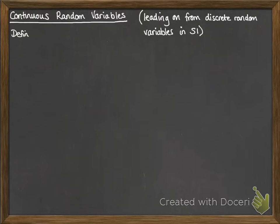So we have definitions here. A continuous random variable is defined by a probability density function. I may shorten that to PDF at various points.